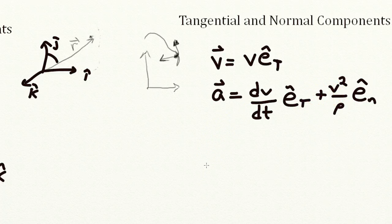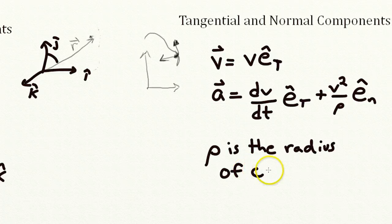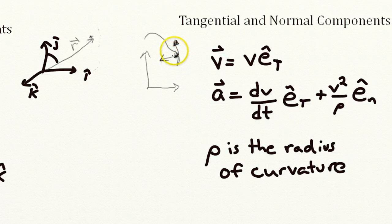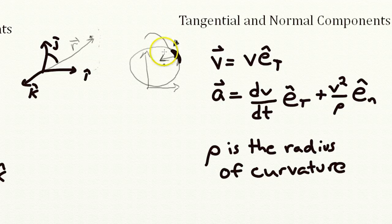So what is rho? Well, rho is the radius of curvature. Now this depends upon the motion, but at any point here, one could say, let's see, you could take kind of the instantaneous arc here and trace it back to some center point where that arc would go into a continuous circle.